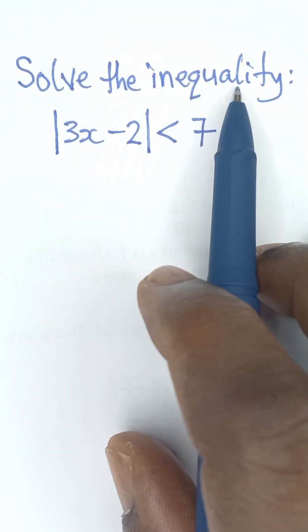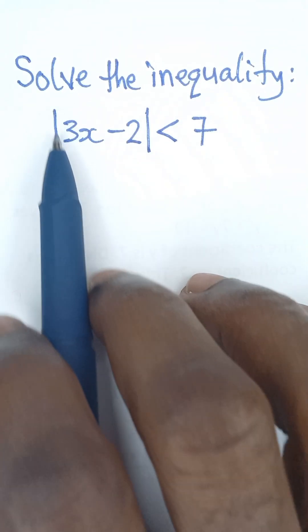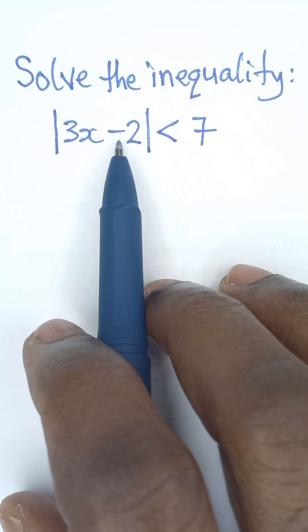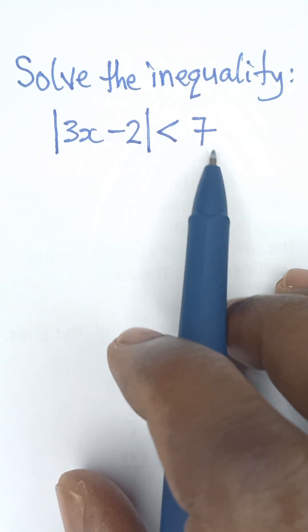Solve the inequality: absolute value of 3x minus 2 is less than 7.